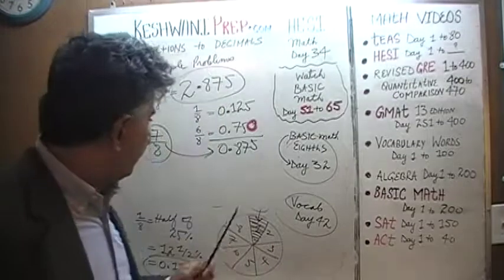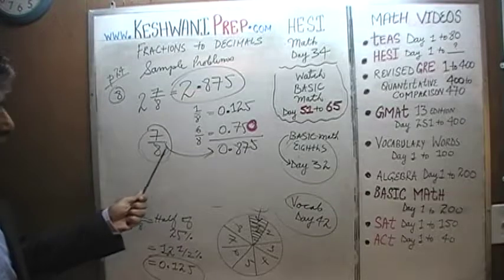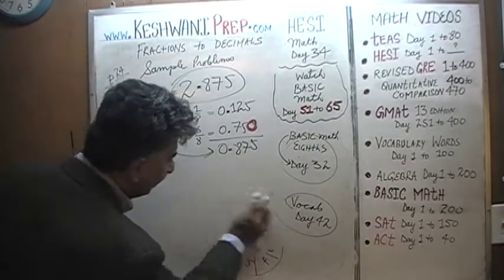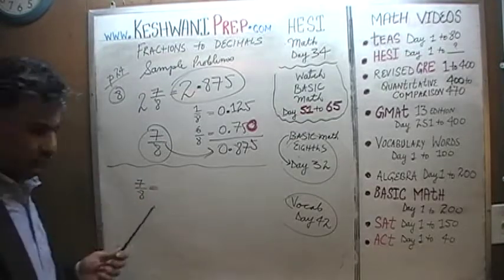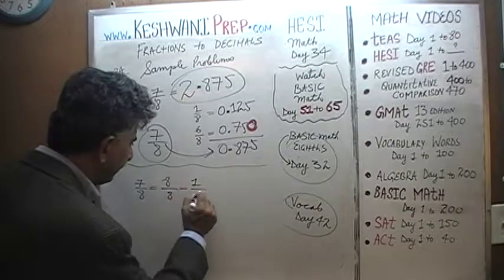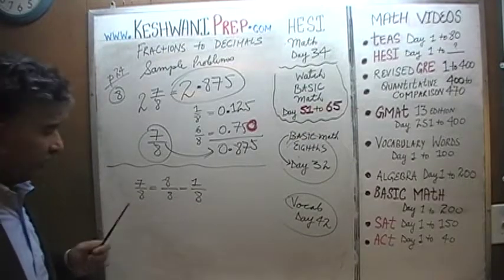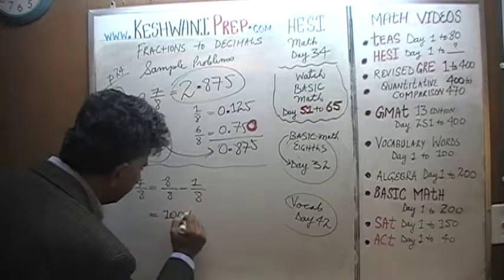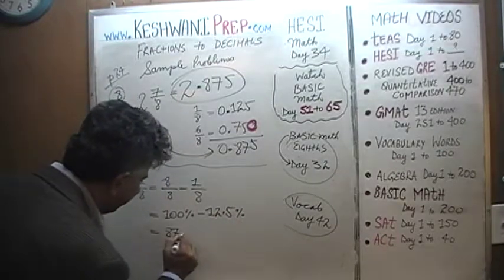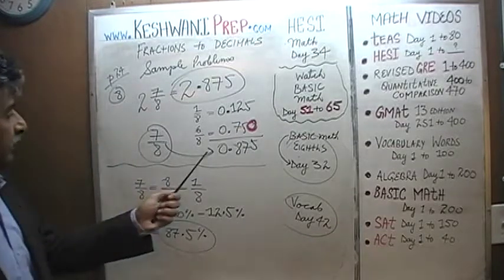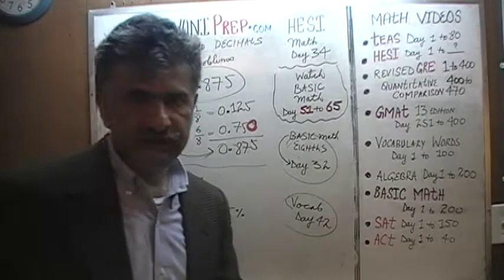Here's another way we could have figured out 7/8 — instead of breaking it into 6/8 plus 1/8, we can understand that 7/8 is simply 8/8 minus 1/8. And 8/8 is the whole thing — the whole circle — which is 100%. So it's simply 100% minus 12.5%, which is 87.5%, or 0.875 in decimal. That's another way of confirming our answer.